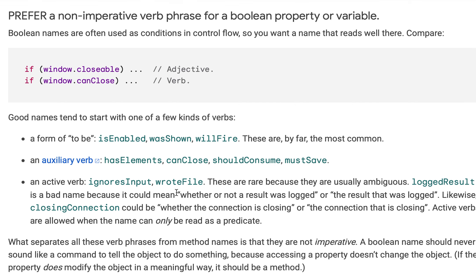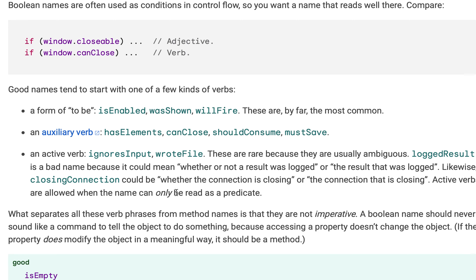What separates all these verb phrases from method names is that they are not imperative. A boolean name should never sound like a command telling the object to do something, or a declaration, because accessing a property doesn't change the object. If the property does modify the object in a meaningful way, it should be a method instead.